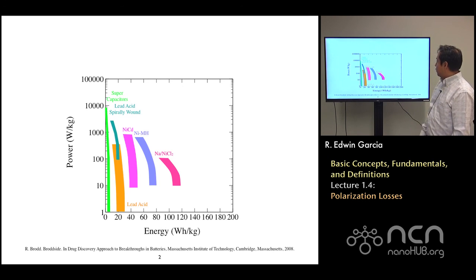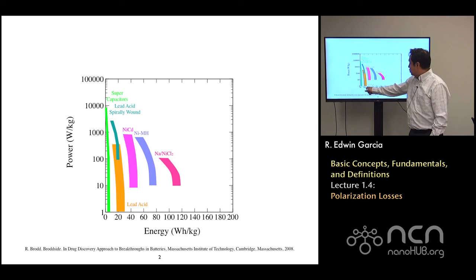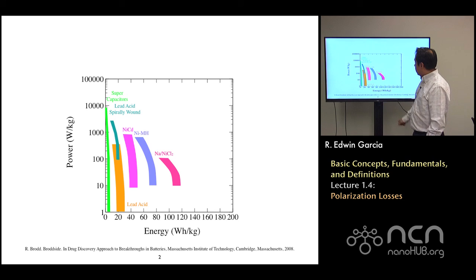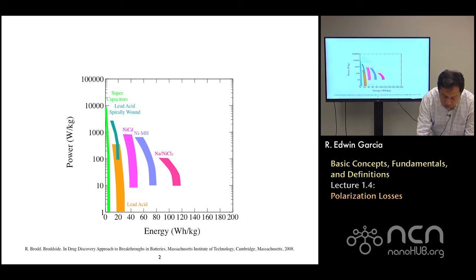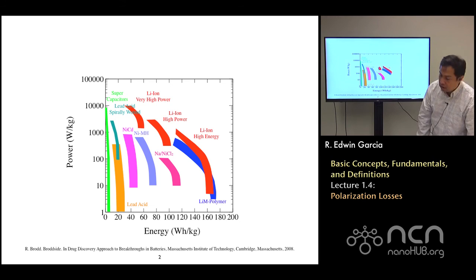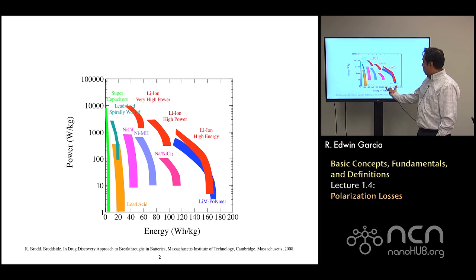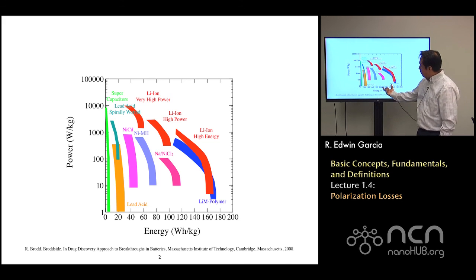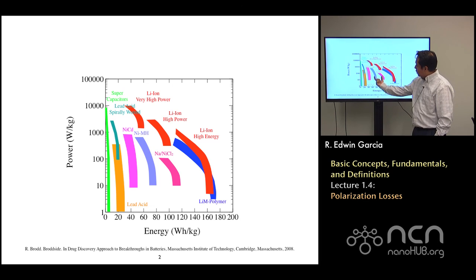Here we have different types of technologies ranging from the classic lead acid, nickel cadmium, nickel metal hydrate, sodium nickel dichloride, and of course the ones we've been focusing on in this class, which is the lithium-ion system — which depending on the application, you can have high energy density with relatively low power density, and as you increase the power density of the system, you decrease the energy density.